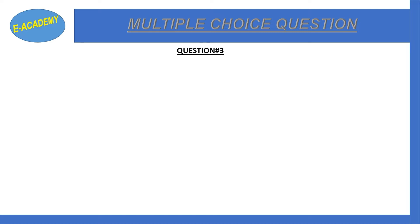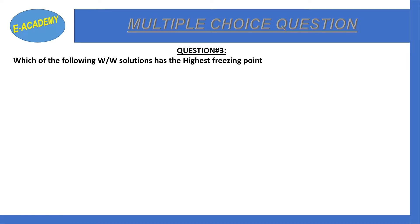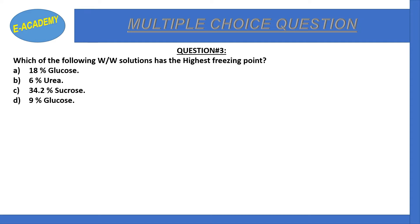Question number 3: Which of the following weight by weight solution has the highest boiling point? a) 18% glucose, b) 6% urea, c) 34.2% sucrose, d) 9% glucose. Correct option is D: 9% glucose.